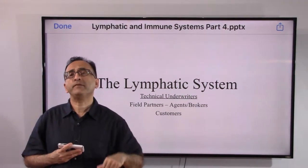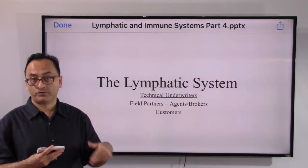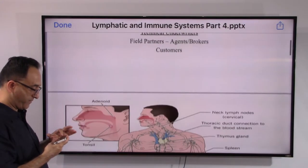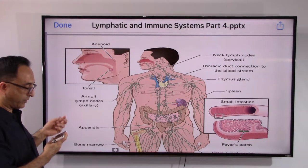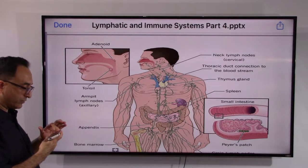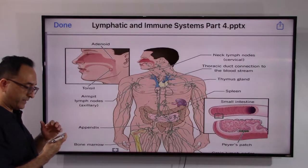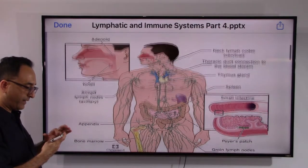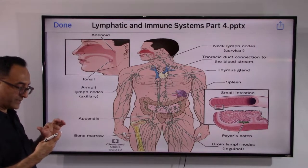Welcome back. In the previous video we looked at the lymphatic capillaries, vessels, and ducts. Now let's take a look at the lymphatic organs — the major aspects of the lymphatic system. Whether we breathe or eat, God has created adenoids and tonsils to stop bacteria or viruses. We have cervical nodes that act like a filter, and the thoracic duct connecting to the bloodstream, plus the thymus gland.